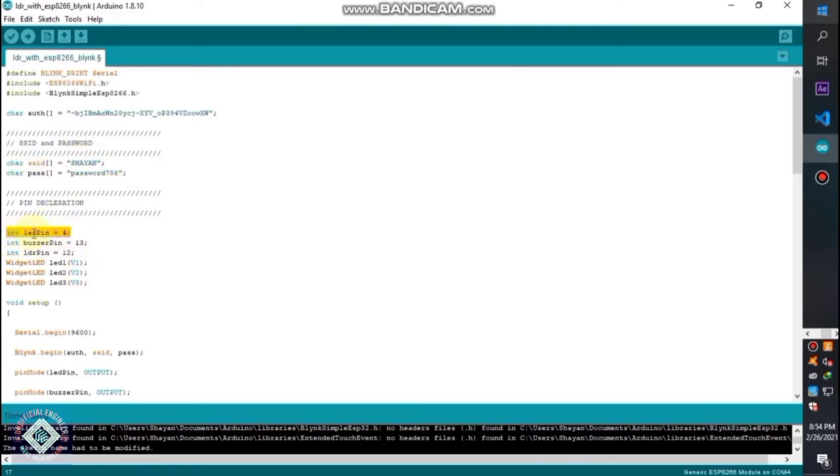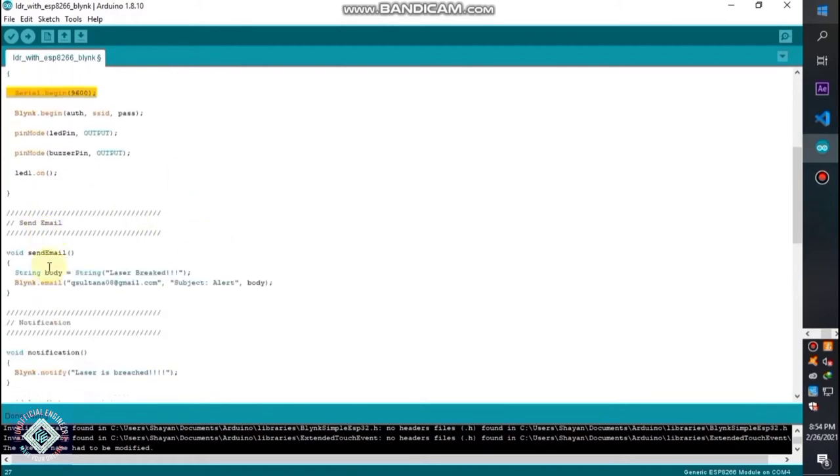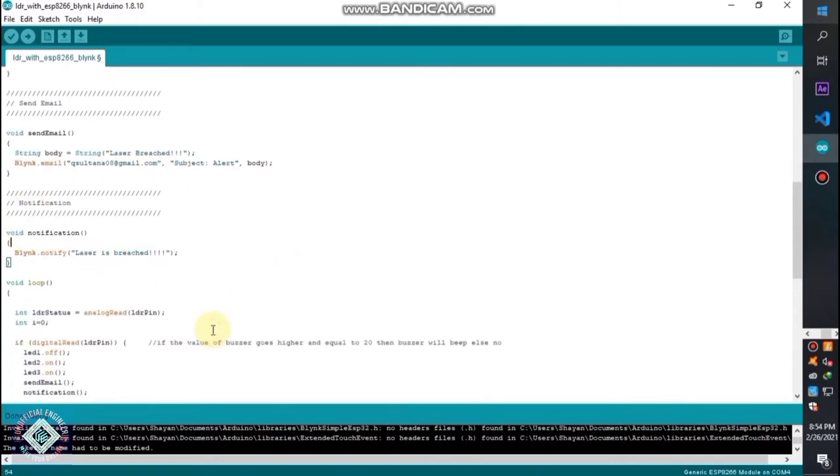After this you can see here we have defined some pins, some LED pins, buzzer pin. The buzzer is optional, you can either use it. Just connect it to the digital pin and ground pin. You can change these pins if you want to select a different digital pin. These are the virtual pins which we will use in our Blink application. This is the email ID in which we will get the notification, so just change it to yours. The message which will be written is laser breach, subject alert laser is breached. You can change all these according to yourself.